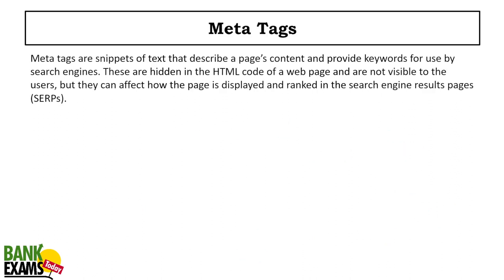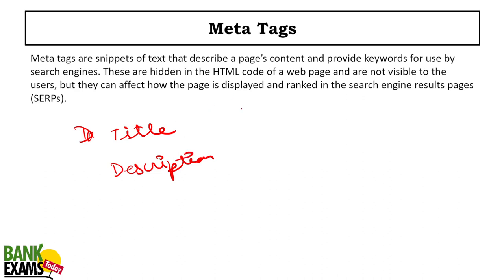Meta tags are snippets of text that describe page contents. Nowadays meta tags are not commonly used, but title tags and meta descriptions are. When you search on Google, for every page there is a title and a description — those are meta tags.